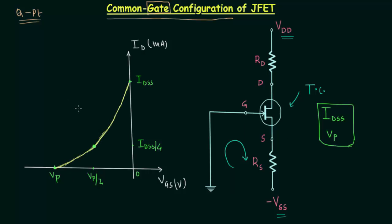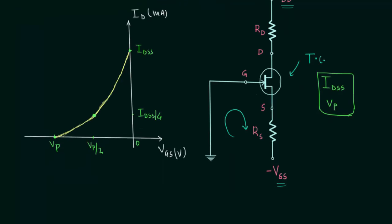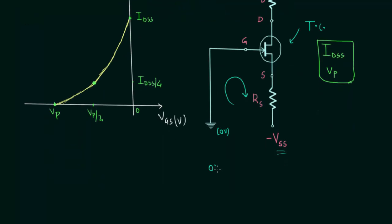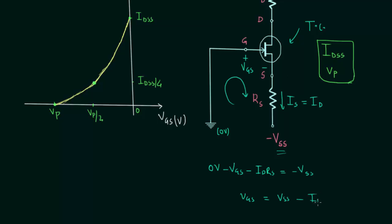Now we will plot the load line by applying Kirchhoff's voltage law in the input loop. Starting from 0V, we have minus VGS, then the voltage drop across resistance RS, which is IDRS, and then we end at minus VSS. Rearranging, we get VGS equal to VSS minus IDRS. This is the equation of a straight line — the load line.